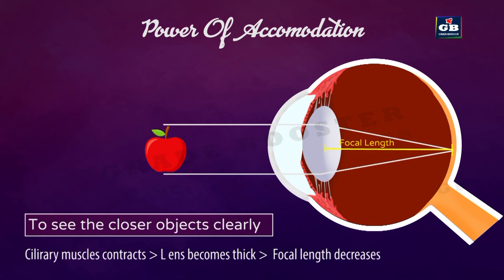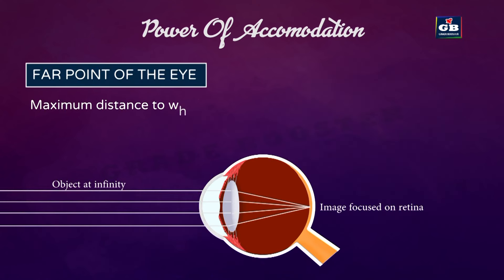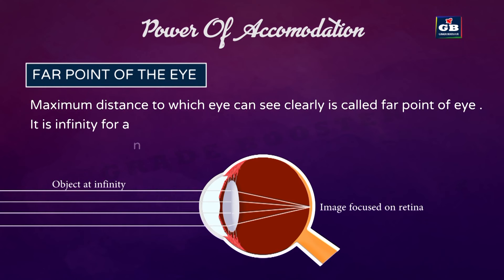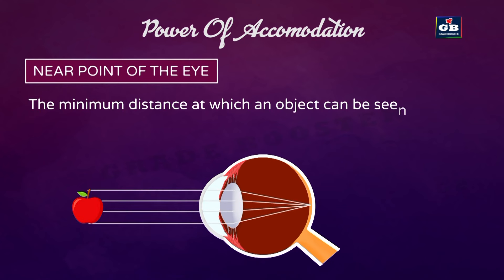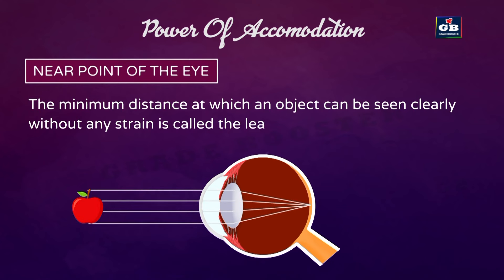Far point of the eye: the maximum distance to which the eye can see clearly is called the far point. It is infinity for a normal eye. Near point of the eye: the minimum distance at which an object can be seen clearly without any strain is called the least distance of distinct vision.